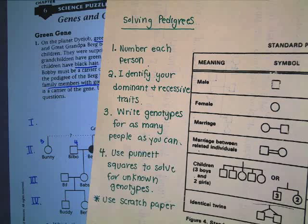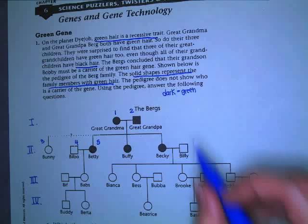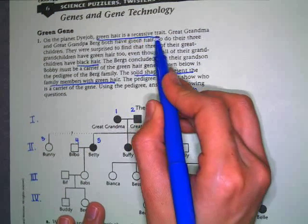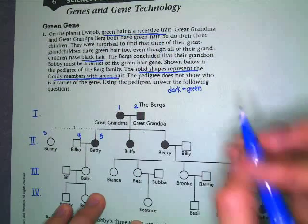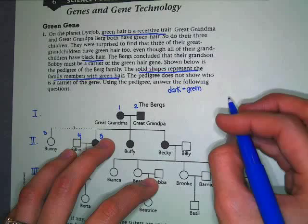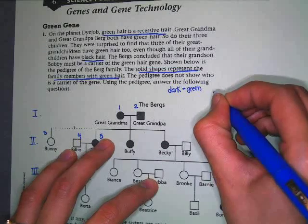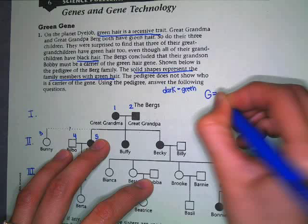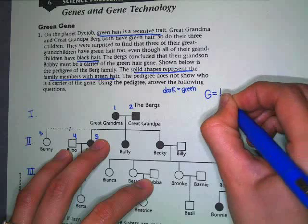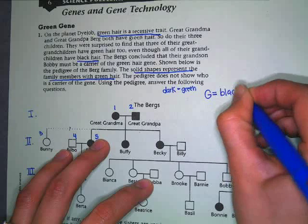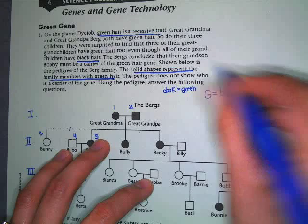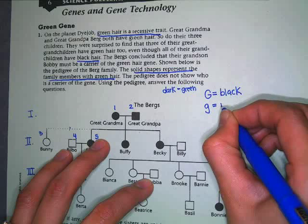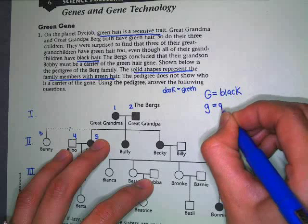Step two: you're going to identify your dominant and recessive traits. We already said green hair — right here it says green hair is a recessive trait. So let's use G since we're talking about green. Big G is going to be our dominant color, which is black according to your word problem.